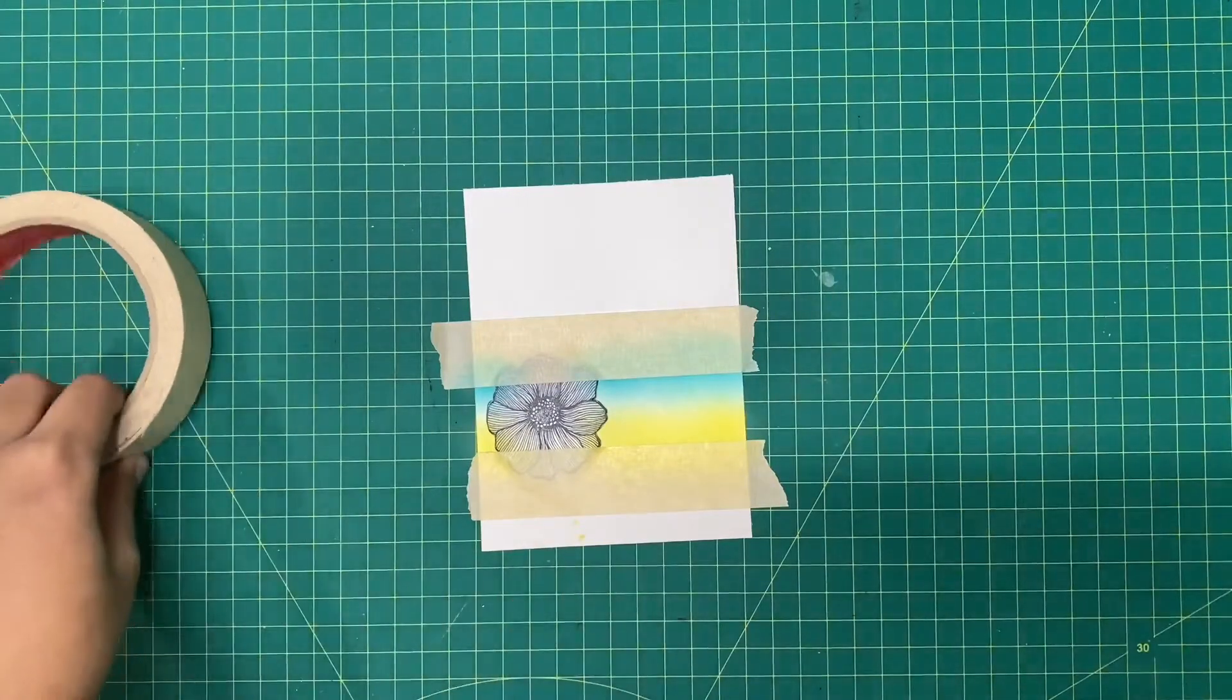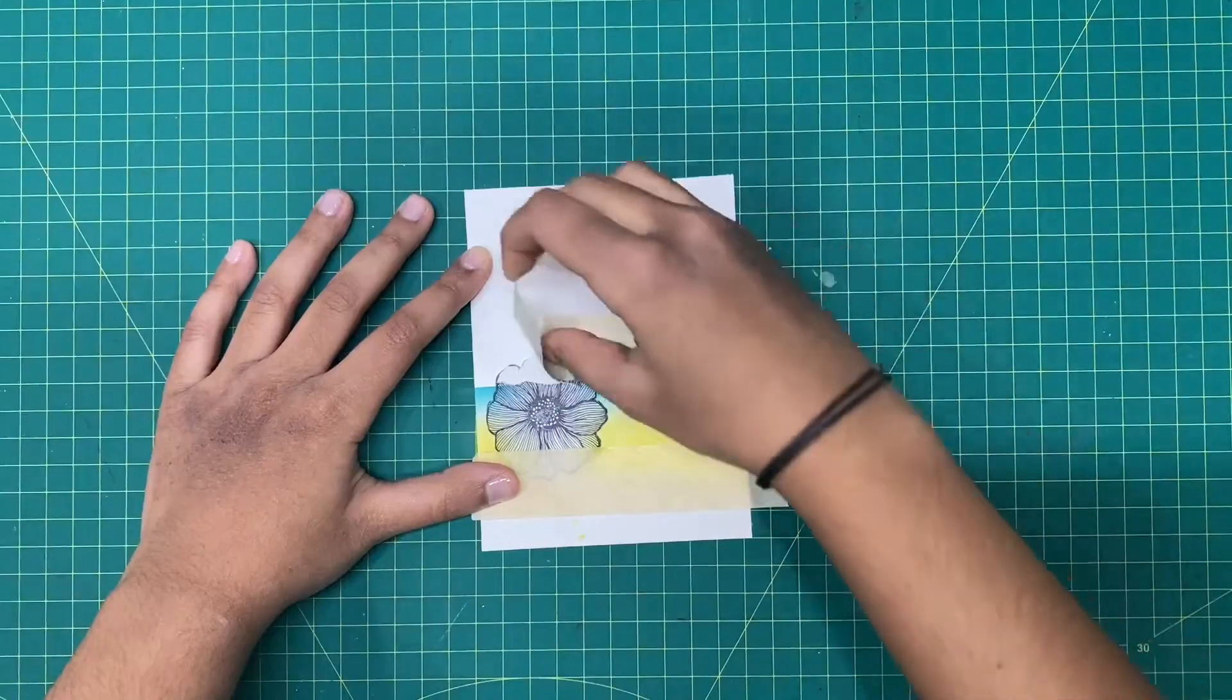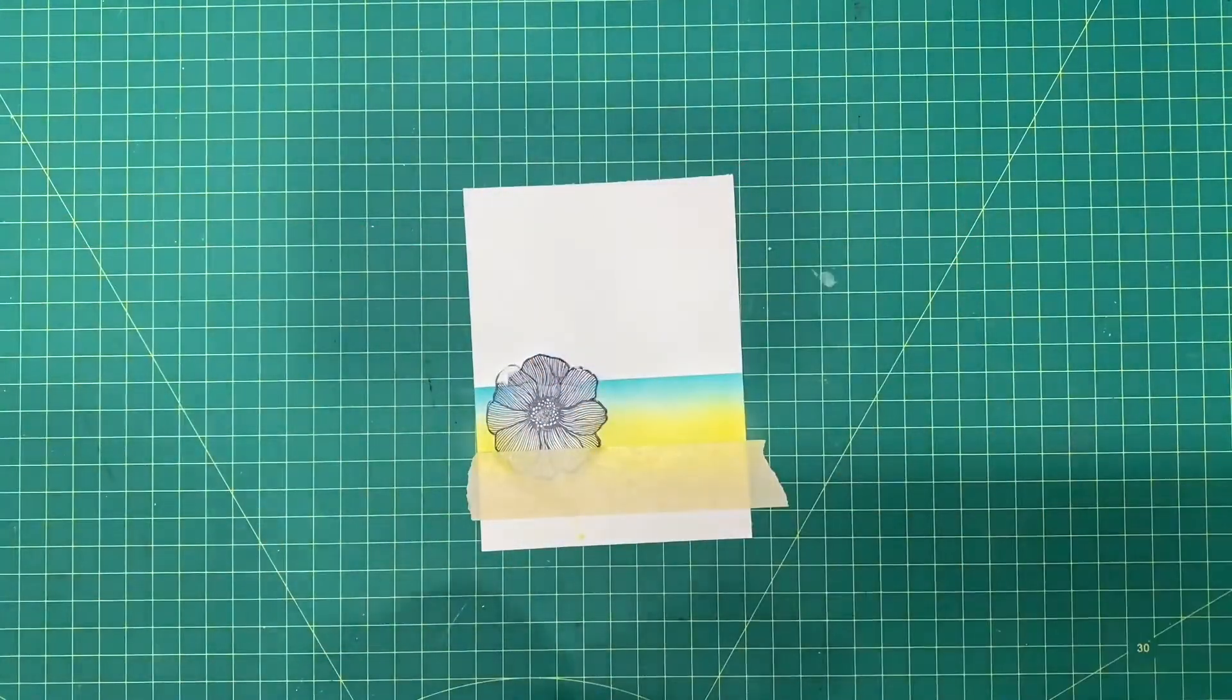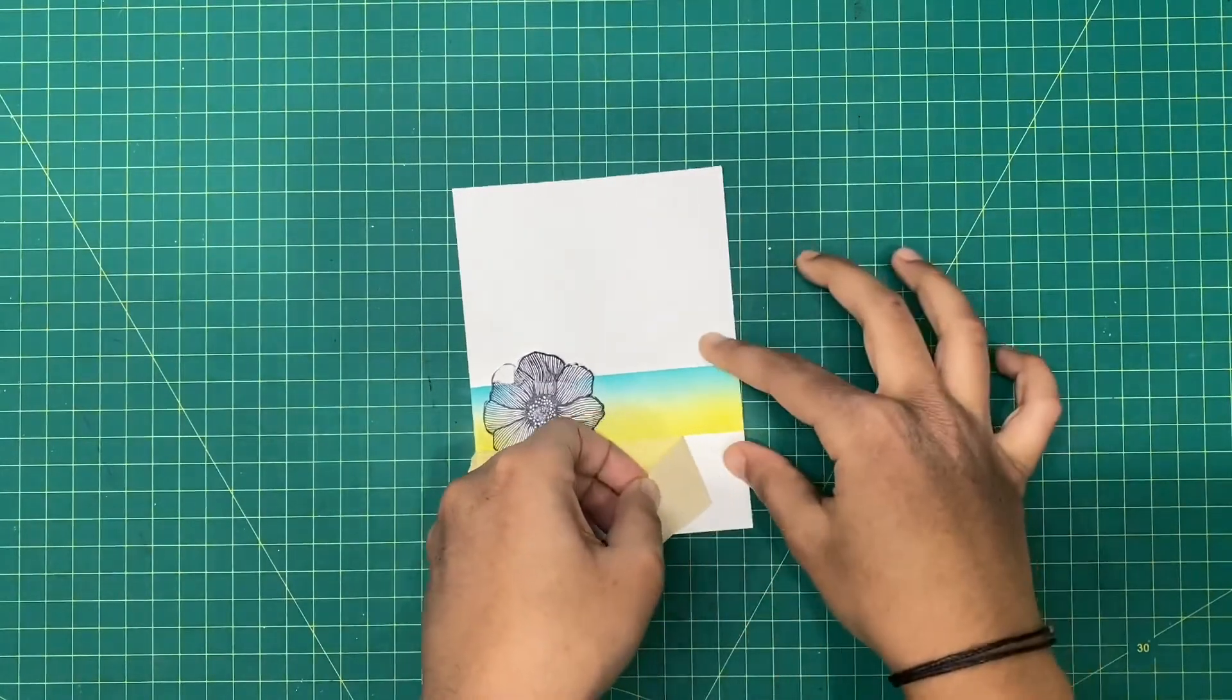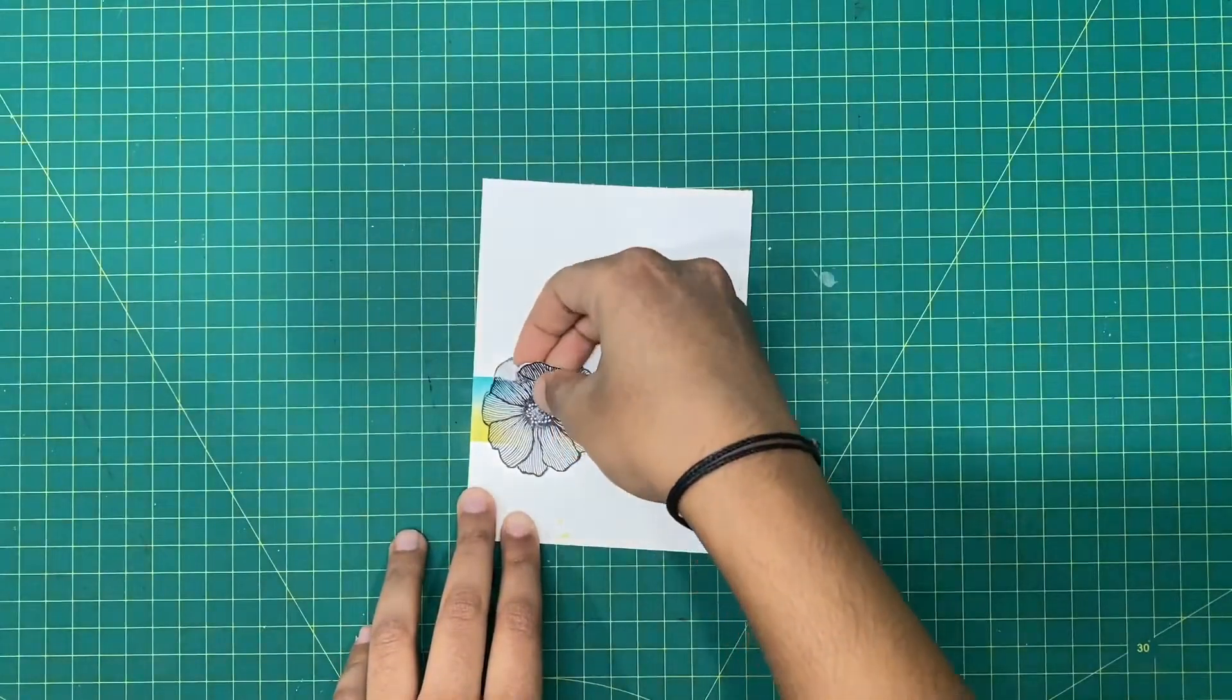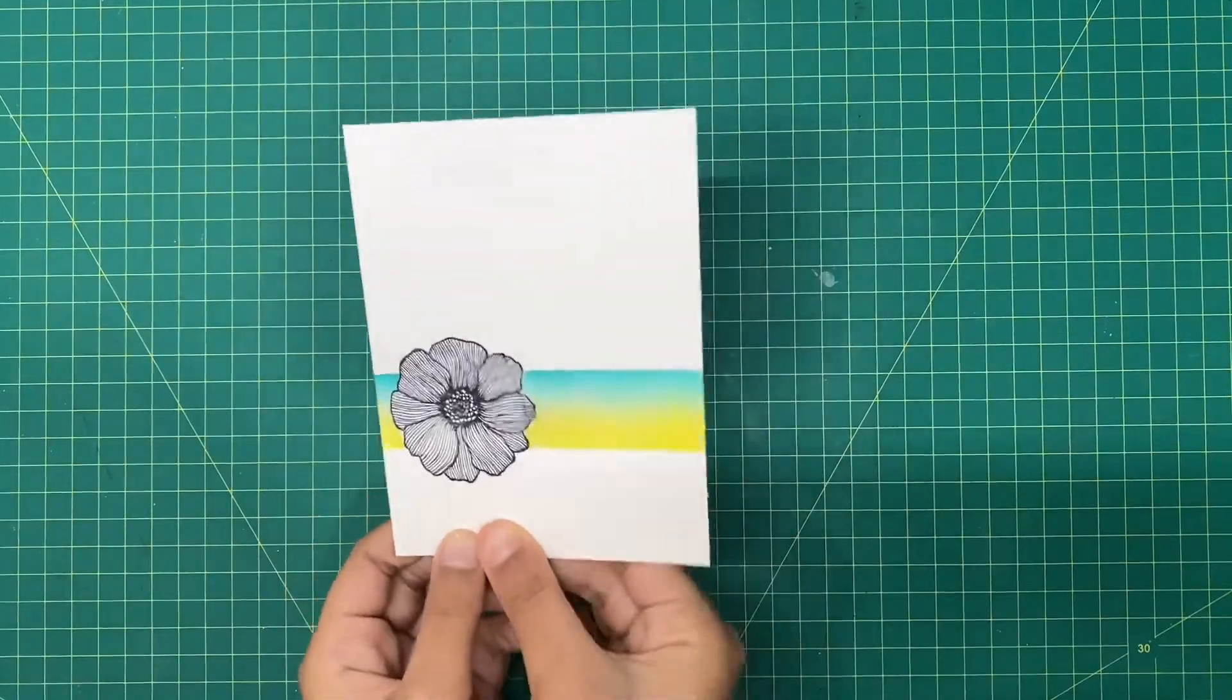Once you're done applying the ink you can take off the masking tape one by one, slowly. After you took off these masking tapes, then you can take off the other sunflower that we stuck. That's our dye ink method everyone.